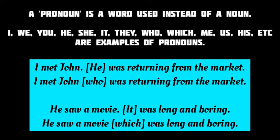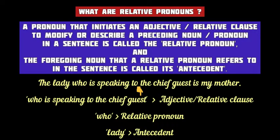Now look at the first pair of sentences. 'I met John. He was returning from the market.' In the second sentence, 'he' is a pronoun used instead of 'John.' But when these two sentences are combined — 'I met John who was returning from the market' — the pronoun 'who' is used in place of 'he' to refer to the noun 'John.' Similarly, in the combined sentence, 'which' is used to modify the preceding noun 'movie.'